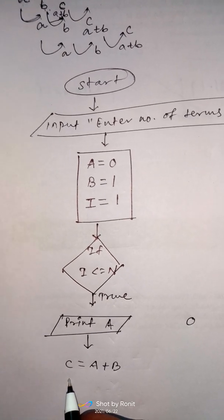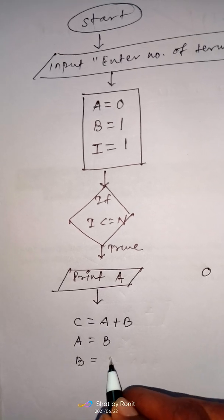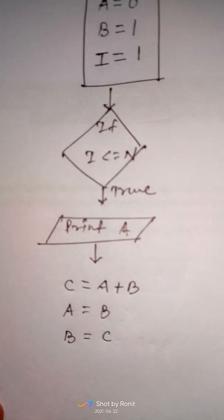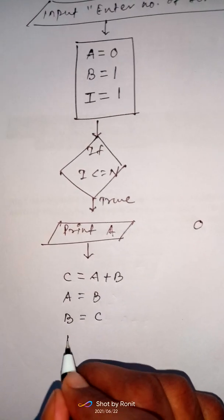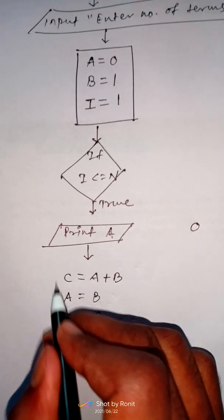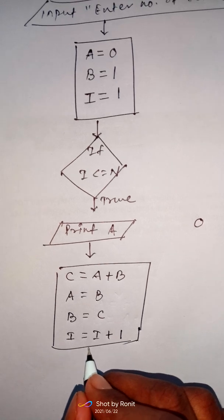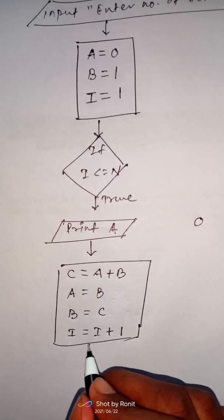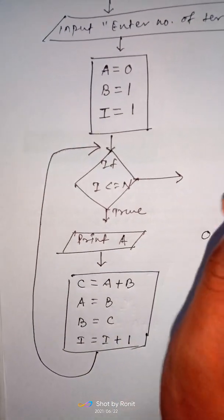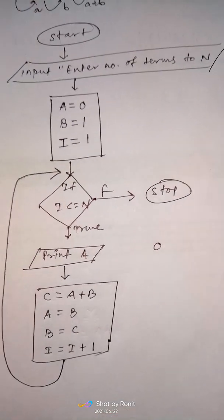Now move a to b, and b to c. Then increment the counter: i = i + 1. We repeat this process until we reach n. If the condition becomes false, the loop will be stopped.